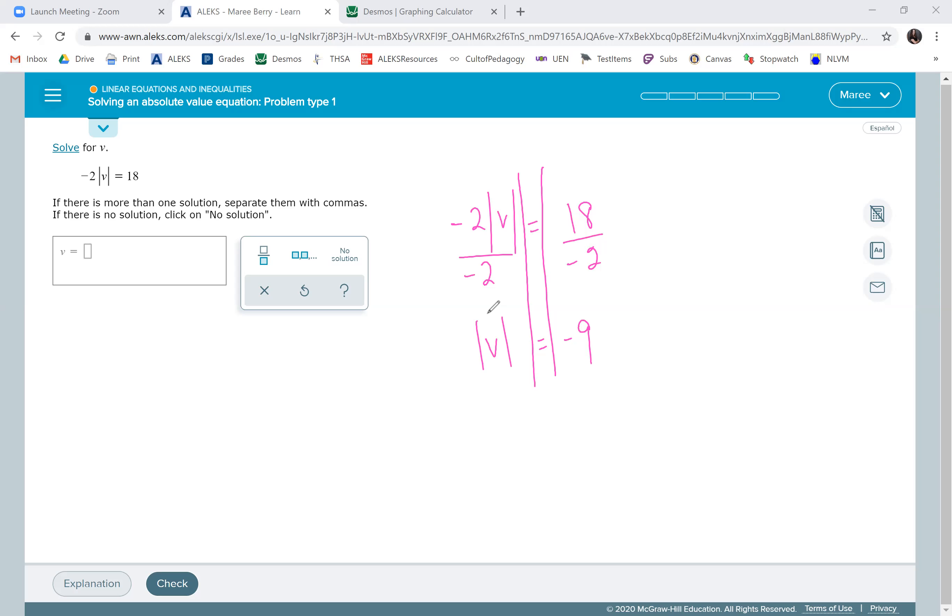When you have the absolute value, it is distance away from zero and you can't have a negative distance. So there's no solution to this. If you ever get this where you have the absolute value is equal to a negative number, then you just put no solution.